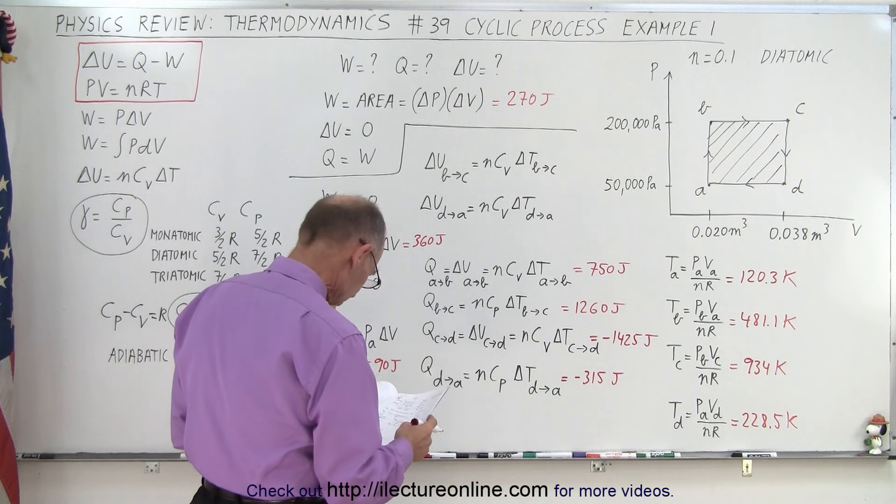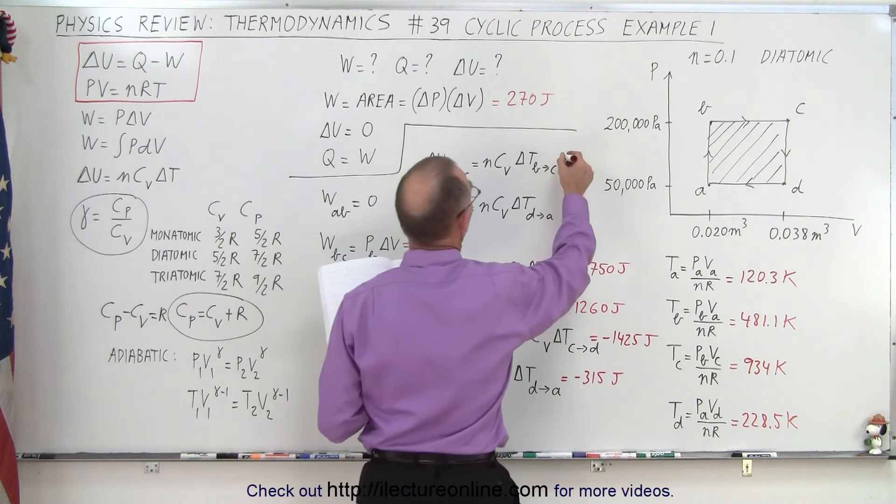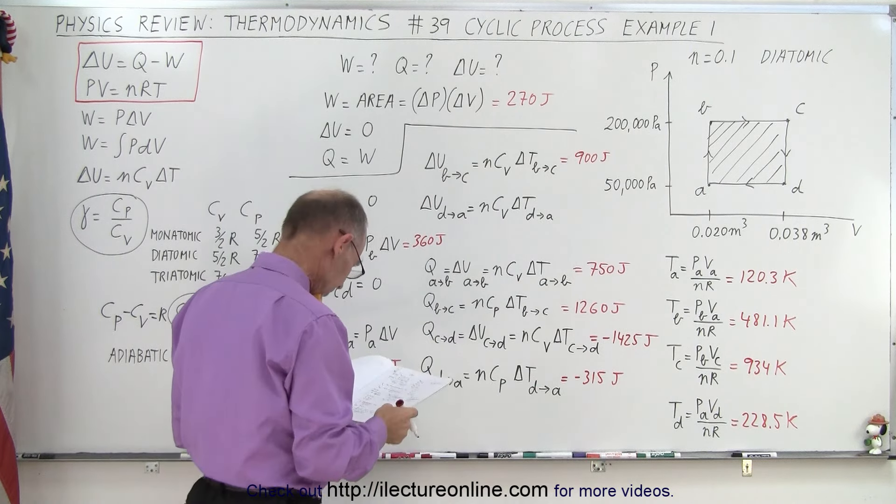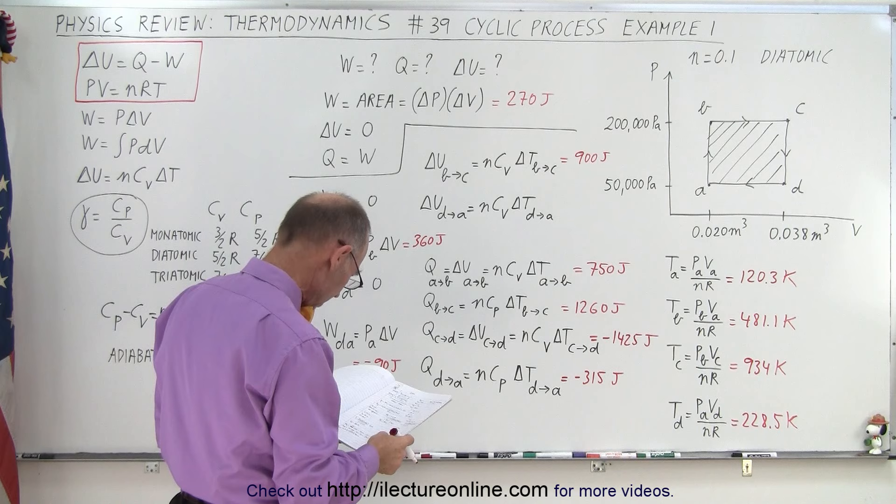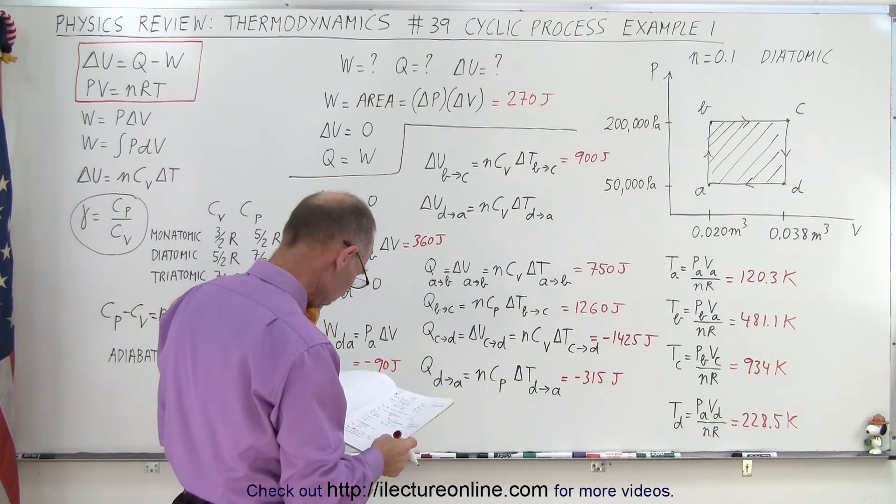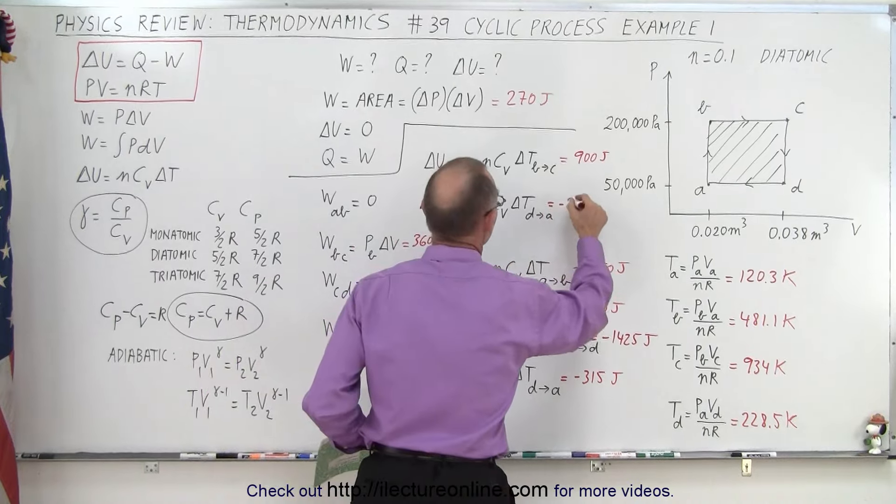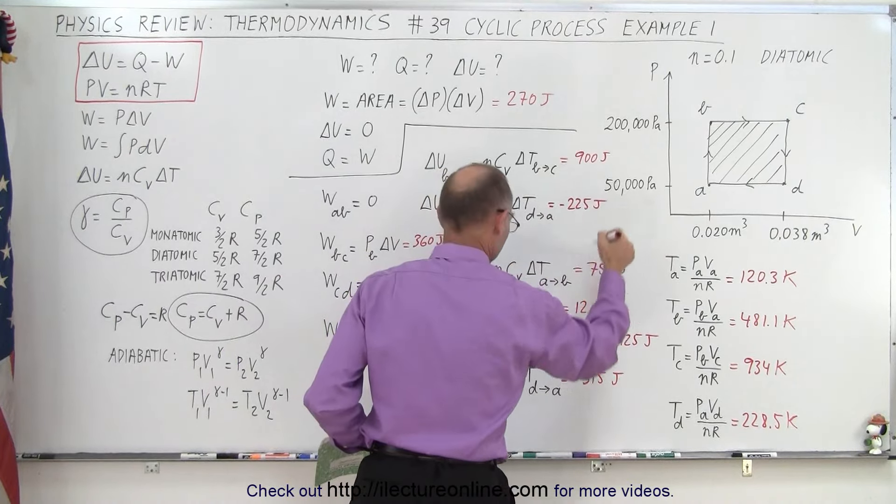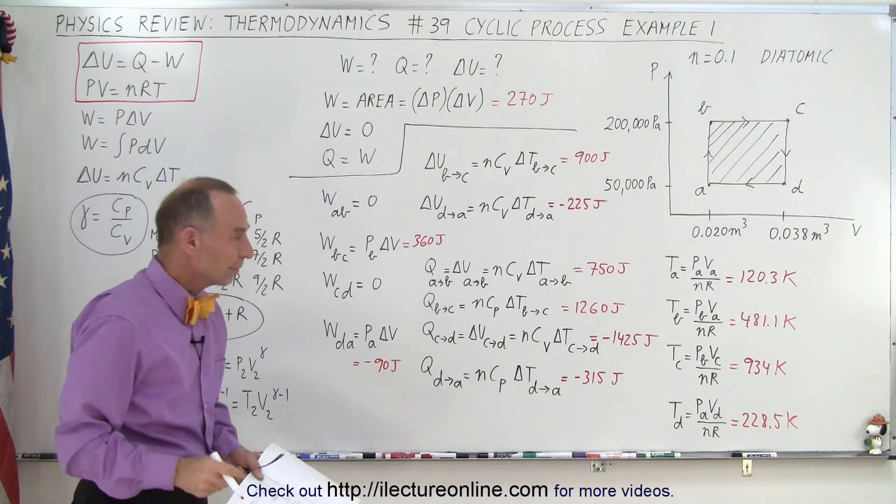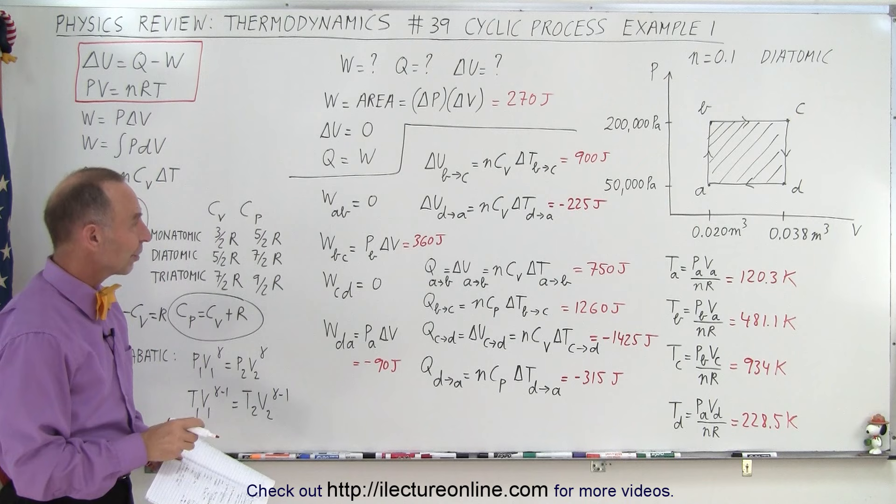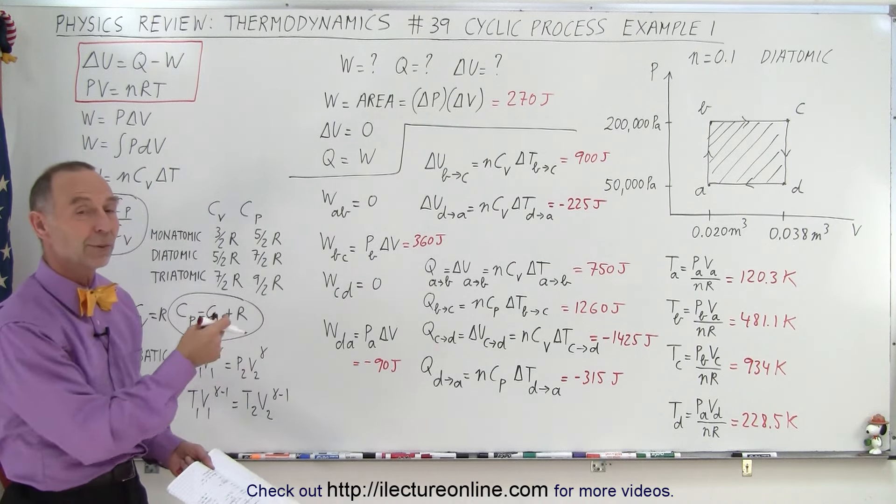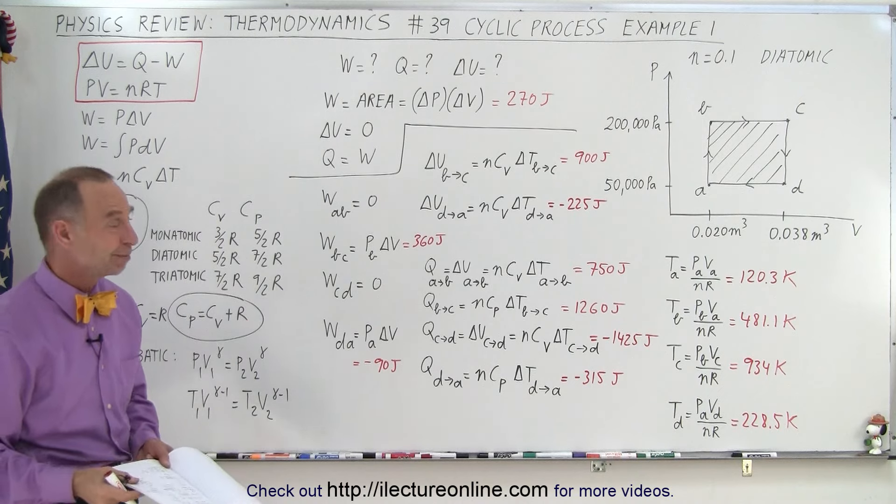And delta U, 900 joules. And delta U here would be 225. That's negative, negative, negative, positive, positive. Okay. All right. So here we have all the values, all the results. Go ahead and try to calculate those yourself and see if they match what we got here on the board. And that is how it's done.